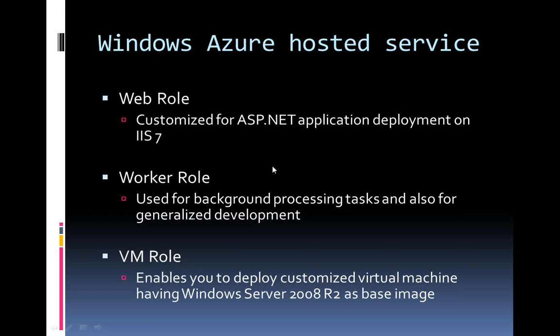Then comes VM role. If you already have a virtual machine and want to customize it, the VM role is the option to deploy a customized virtual machine for your application. For web role and worker role, you get a standard virtual machine provided by Microsoft, whereas with VM role you can customize it based on your requirements. For Java deployment, you can choose either a worker role or a VM role. Today's focus will be how to use the worker role to deploy JSP applications on the Microsoft Cloud.